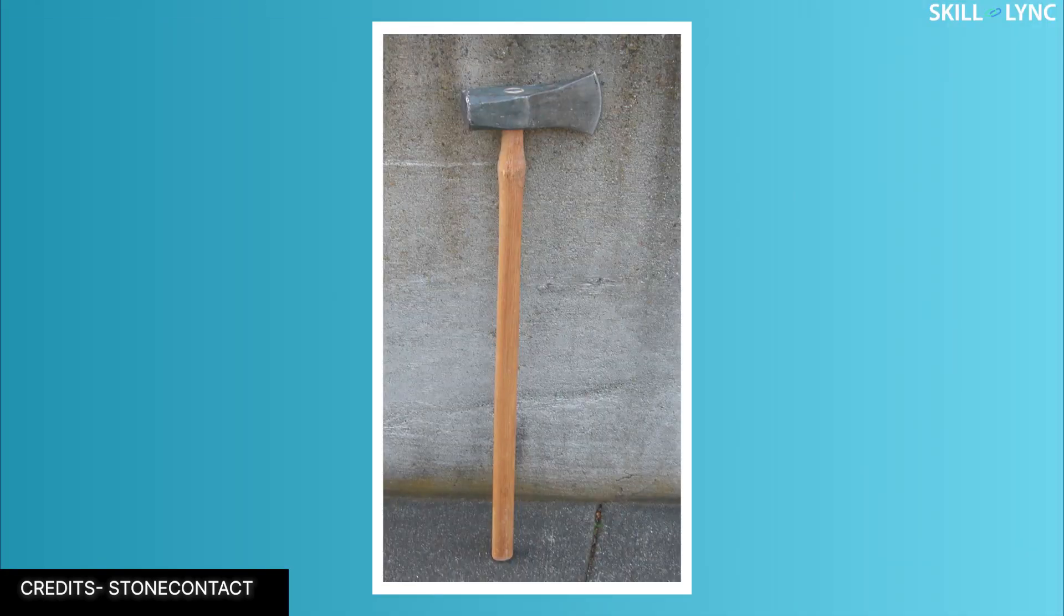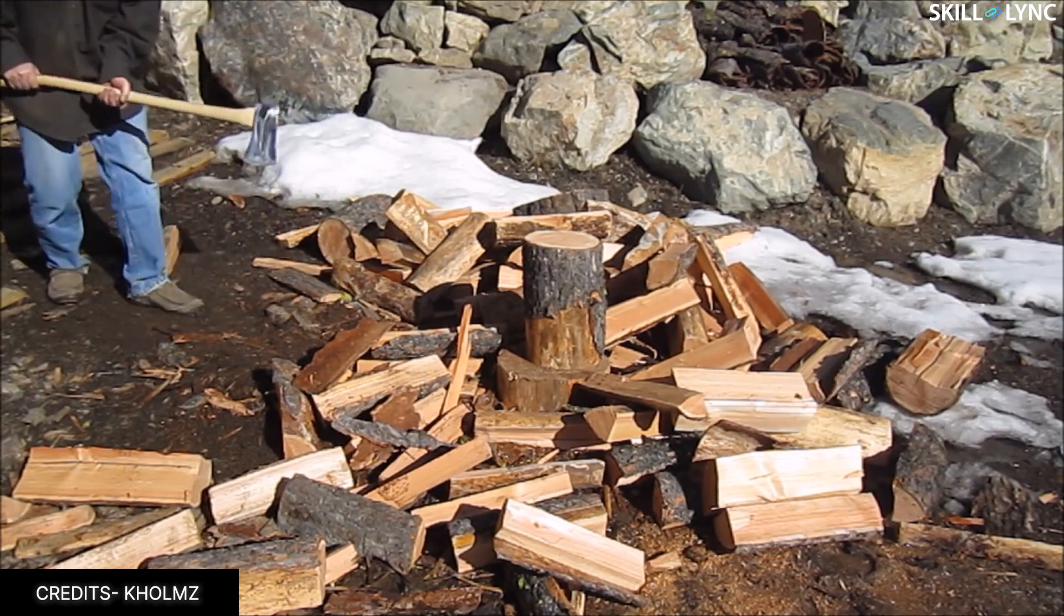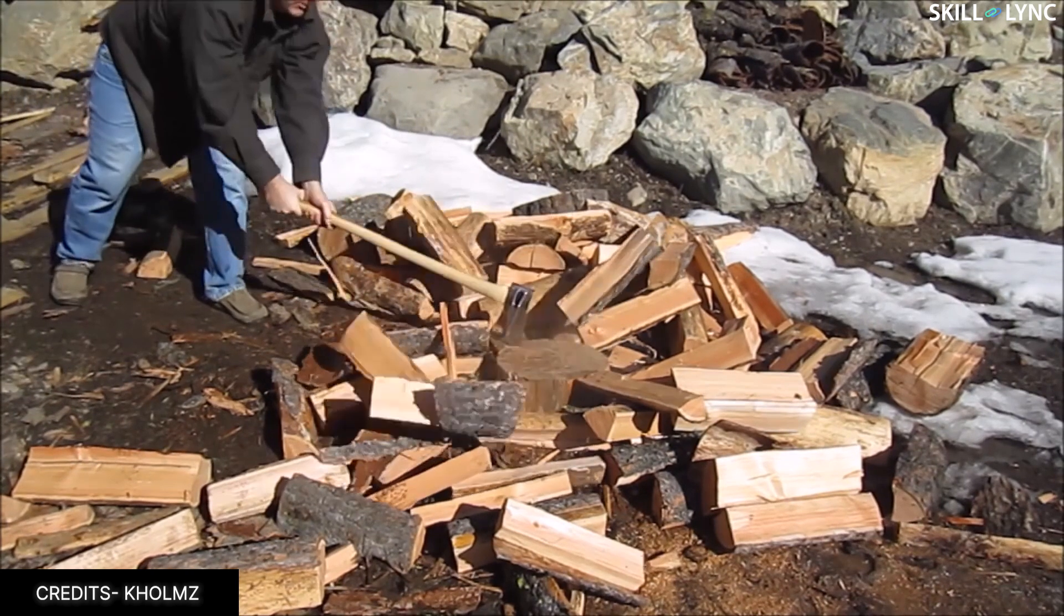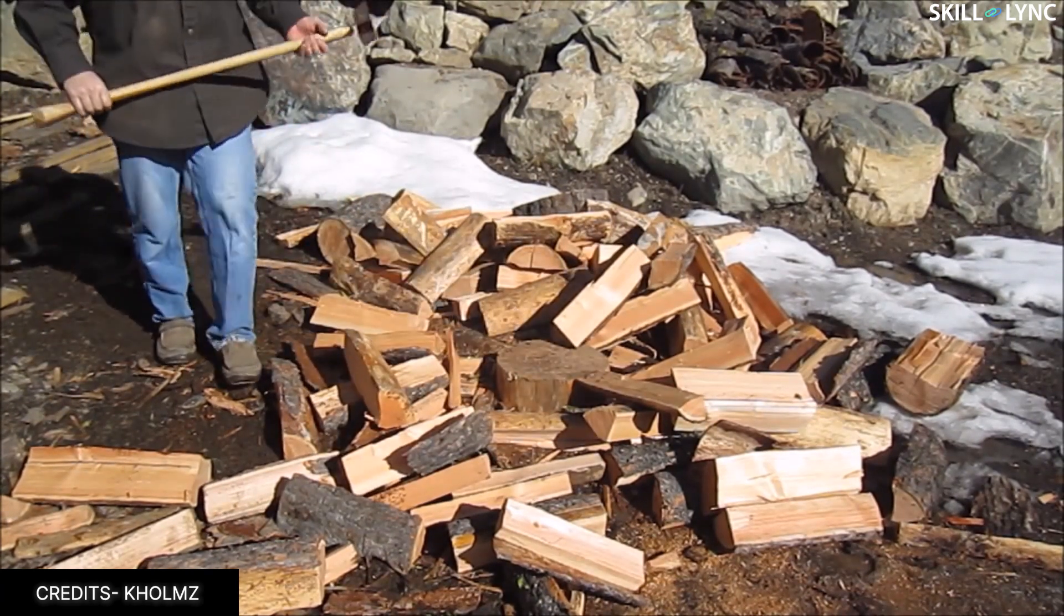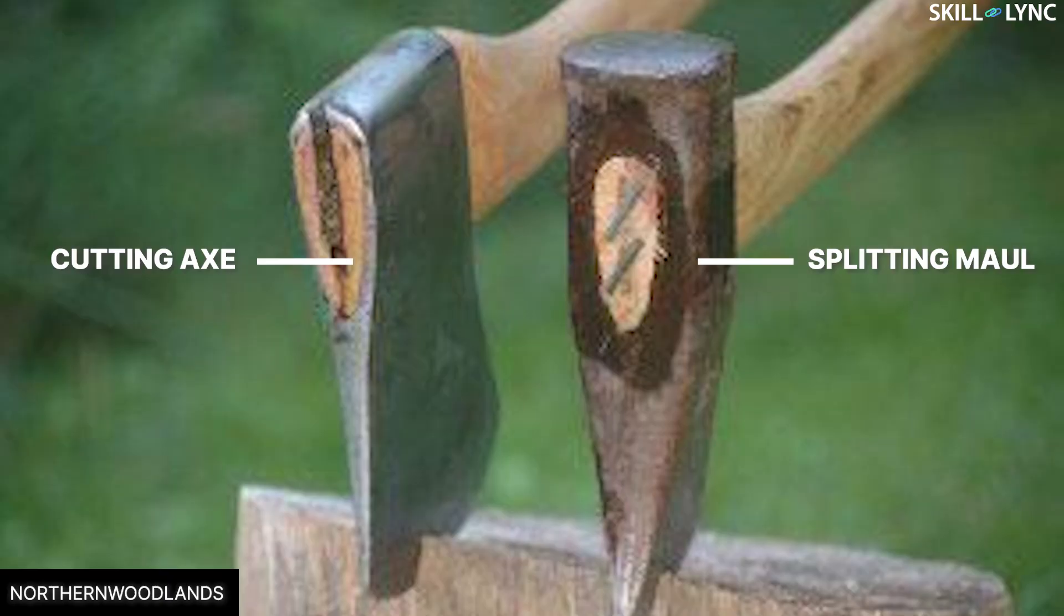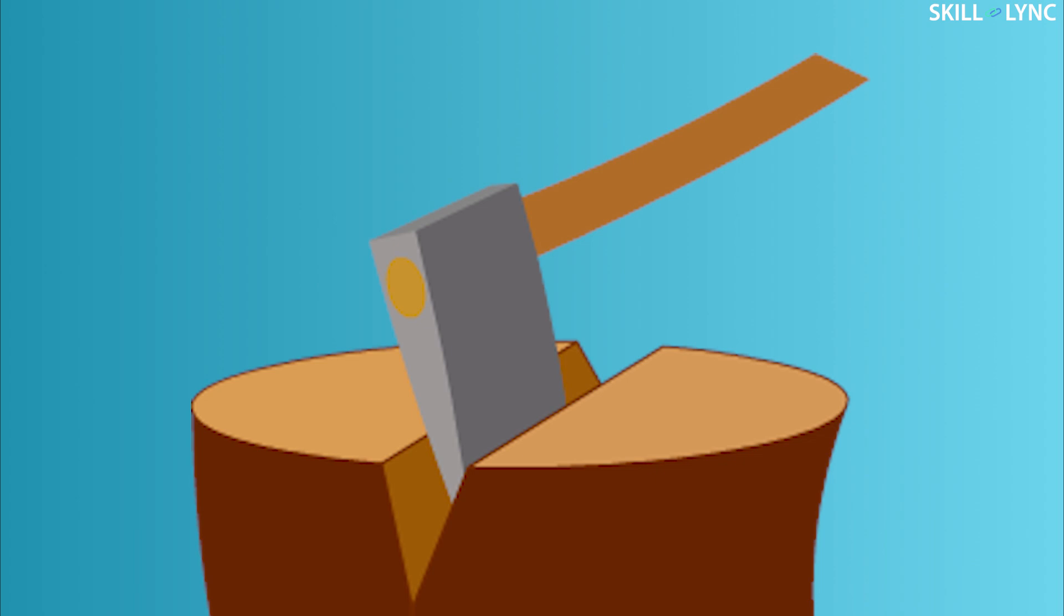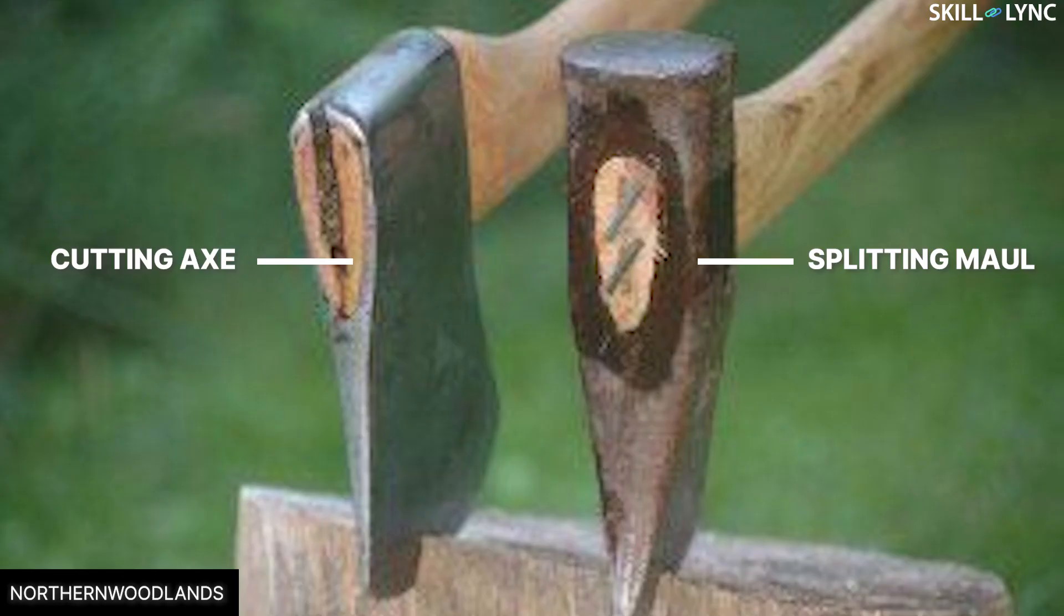Another good example of a wedge is splitting mauls. Splitting mauls are a type of axe which are used to split blocks of wood into kindling for fire. The design of the splitting mauls is much different than regular axes. They are meant to split the wood instead of cutting it. And because of this, they have a much more aggressive curve and angle than regular axes.